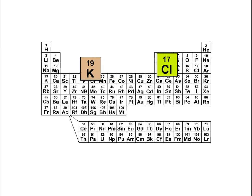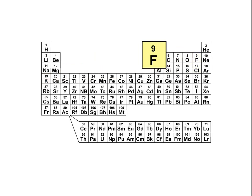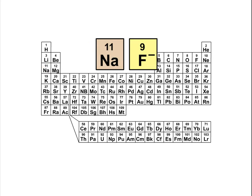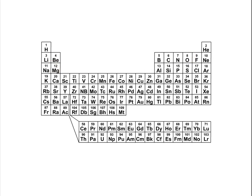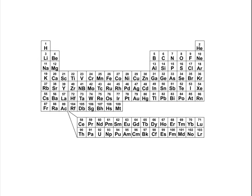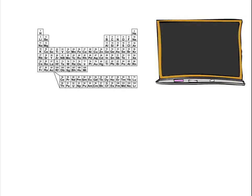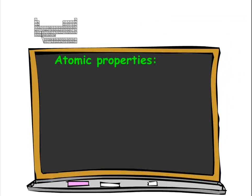It explains why fluorine readily becomes a negative ion while sodium just as readily becomes a positive ion. In this tutorial, we'll examine three specific properties of atoms as a function of their electronic configuration.